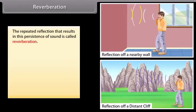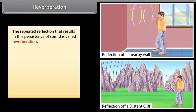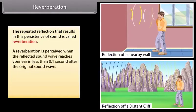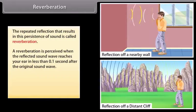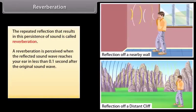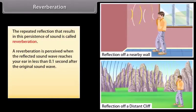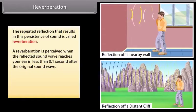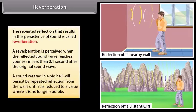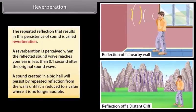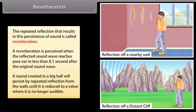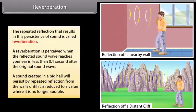Reverberation. The repeated reflection that results in this persistence of sound is called reverberation. A reverberation is perceived when the reflected sound wave reaches your ear in less than 0.1 second after the original sound wave. For example, a sound created in a big hall will persist by repeated reflection from the walls until it is reduced to a value where it is no longer audible.